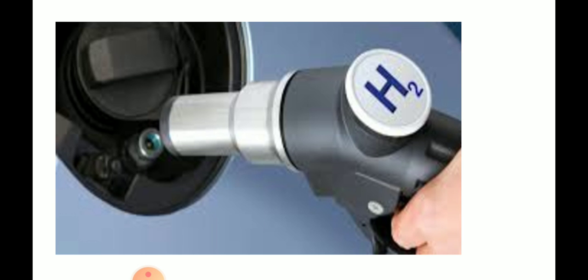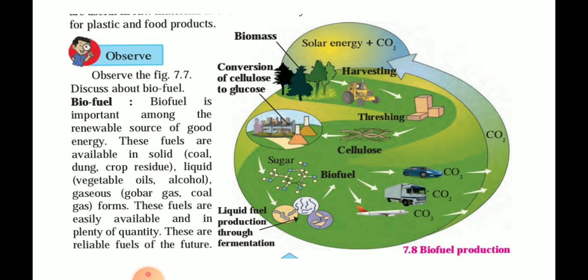Next comes biofuel. We can collect different remains of plants and animals. The biomass from plants can be taken in the form of dry or dead substances, or the remains left after harvesting agricultural products. From this we can obtain cellulose — dry grass, dry leaves, plant remains, and leftover food grains.